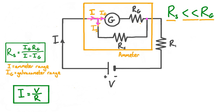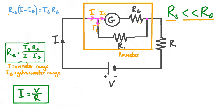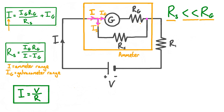We can also rearrange this equation to give us a formula for the maximum range of an ammeter based on its components. To do this, we make I the subject: multiply both sides by the denominator on the right-hand side, then divide both sides by Rs, and finally add Ig to both sides, to give I equals Ig times Rg over Rs, plus Ig. This formula tells us the range of our ammeter I, in terms of the range of our galvanometer Ig, the resistance of the galvanometer Rg, and the resistance of the shunt resistor Rs.